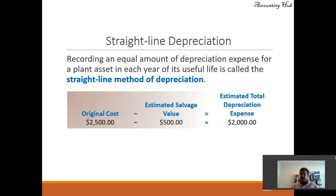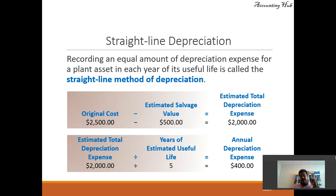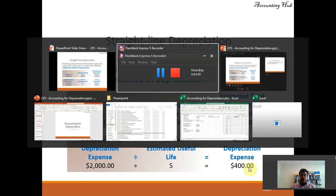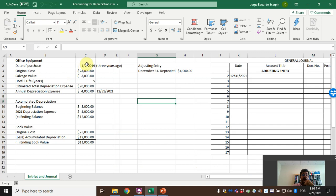Here is the formula: original cost — for instance twenty-five hundred — less salvage value of five hundred gives an estimated total depreciation expense of two thousand dollars. Alternatively, with the vehicle example: twenty thousand minus five thousand equals fifteen thousand dollars total depreciation. Divide by a useful life of five years, and that gives three thousand dollars per year. Or with the smaller example: two thousand divided by five years equals four hundred dollars per year.